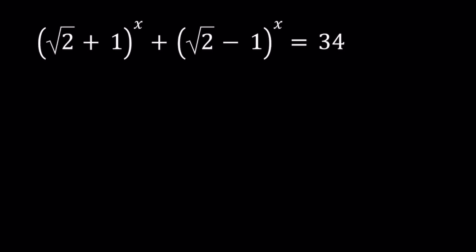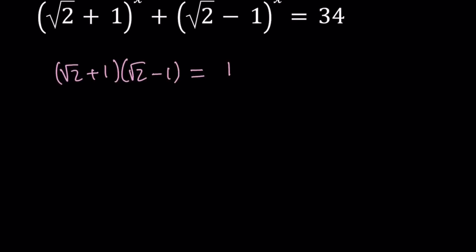First of all, I want you to note that square root of 2 plus 1 times square root of 2 minus 1 equals 1. Why? Because these two expressions are conjugates or you could also call them reciprocals. From difference of two squares, their product is 1. So what happens if you raise both sides to the power x? Nothing changes on the right hand side. So we can safely say that these two, when multiplied, will give us 1 again.